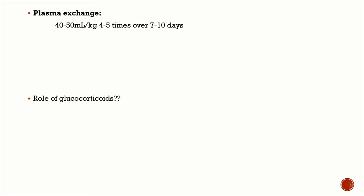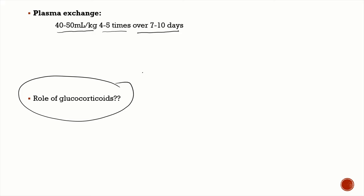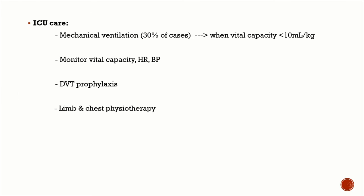Plasma exchange is dosed at 40 to 50 mL/kg, given four to five times over seven to ten days. There is absolutely no role for steroids or glucocorticoids in GBS.